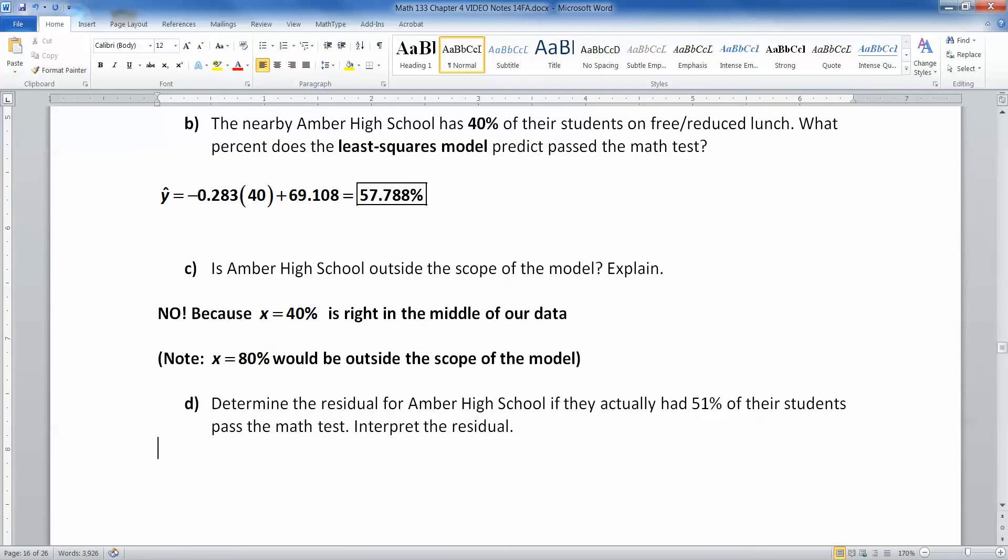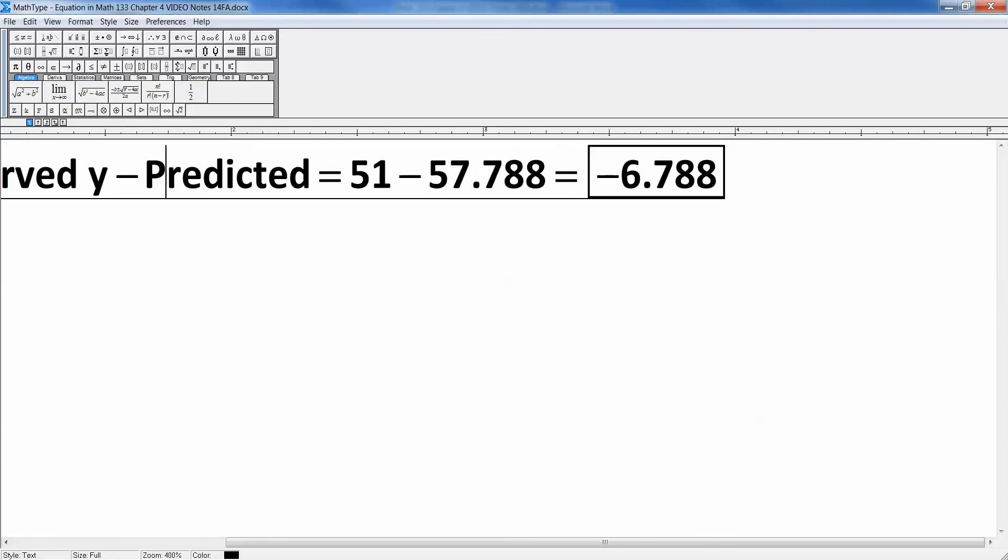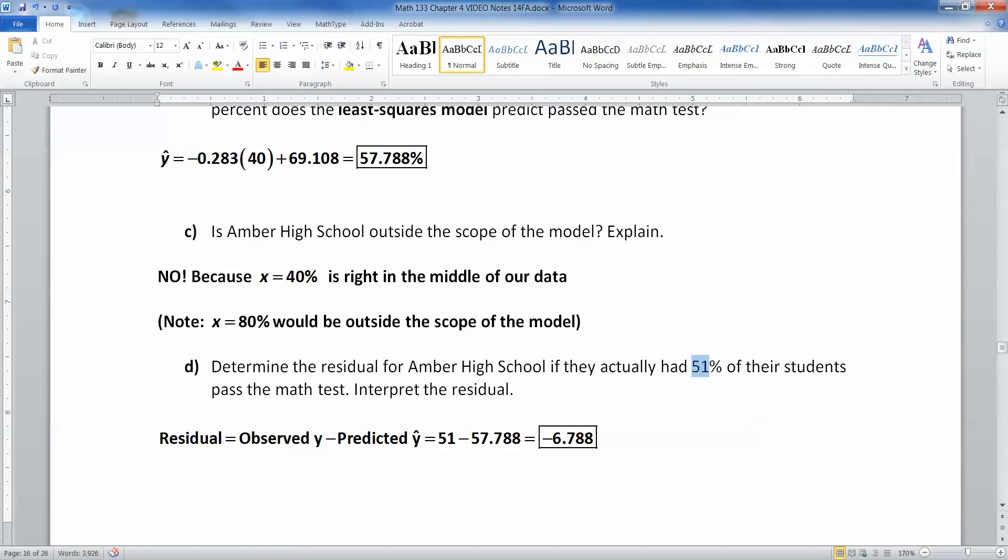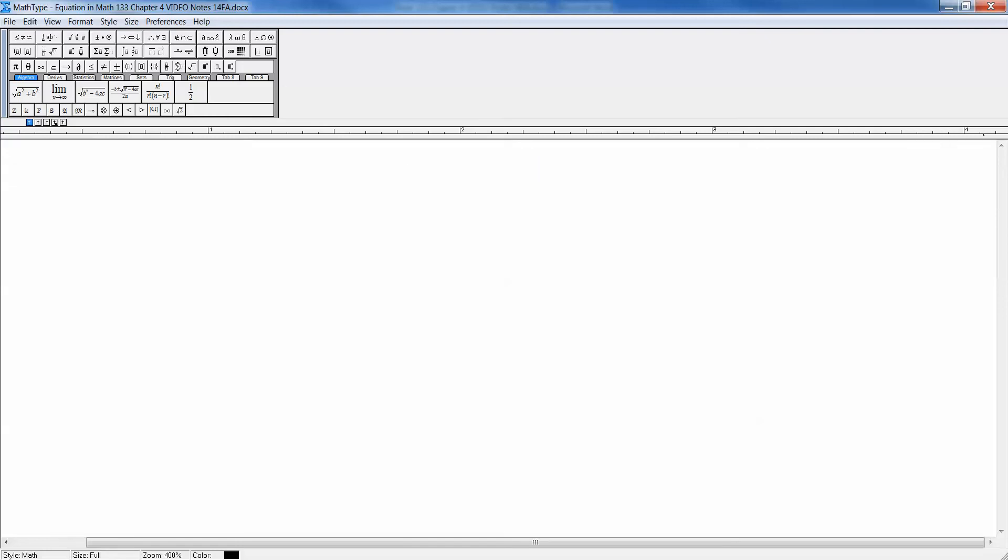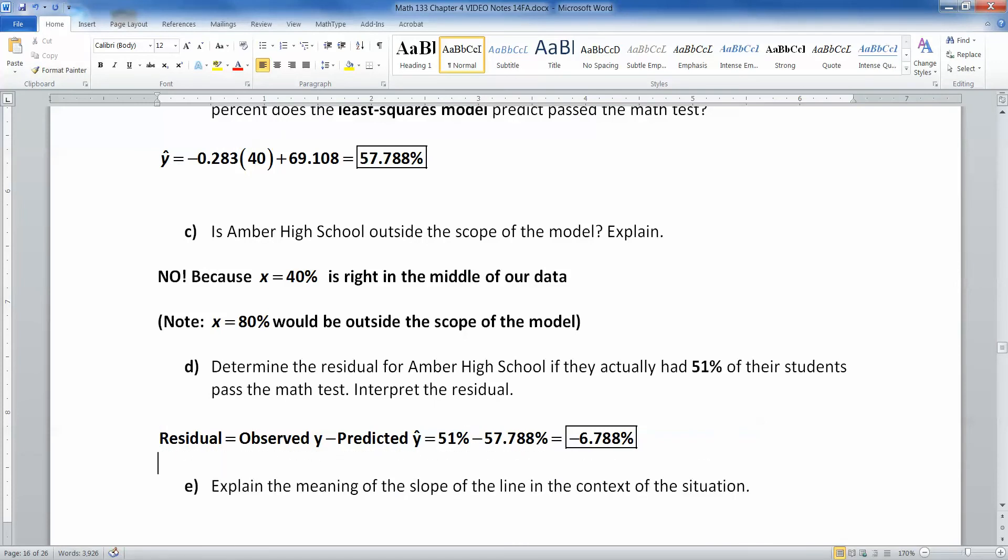Now, what about the residual for Amber High School? Well, remember the residual is the observed Y minus the predicted Y hat. So the observed Y minus the predicted Y hat. There we have it. And that would be negative 6.788. Because you take the observed, which is 51, that's what they really were. And then you subtract away what you thought it would be, your prediction, which is up here. You predicted 57.88. So you take 51 minus 57.788 and you have negative 6.788. Technically, it's a percentage in this one because both of these were percents.